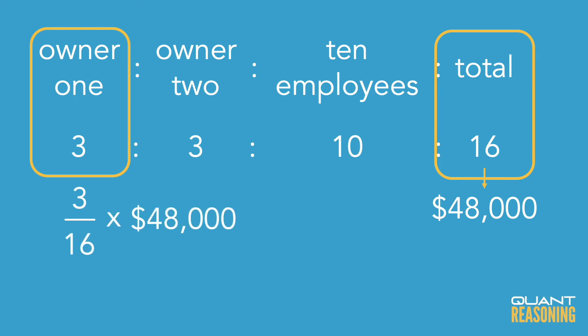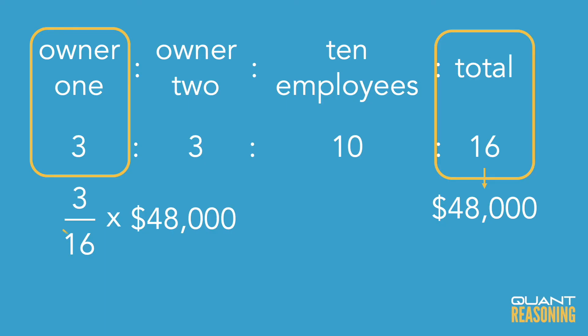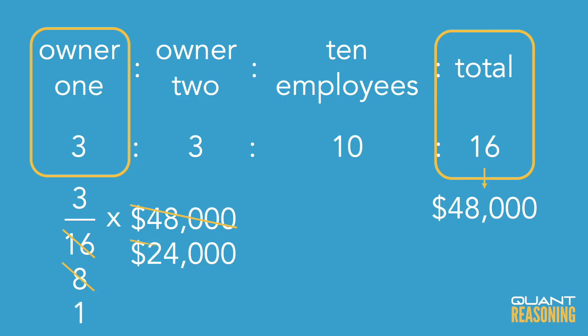So now we just have to compute 3/16ths times 48,000. You can reduce by a factor of 2 — take a 2 out of the 16 and a 2 out of the 48,000 — and you're left with 3/8ths of 24,000. You can now reduce by a factor of 8, so instead of 3/8ths times 24,000, you have 3 times 3,000, and there's your answer: 9,000.